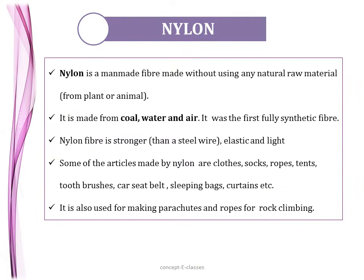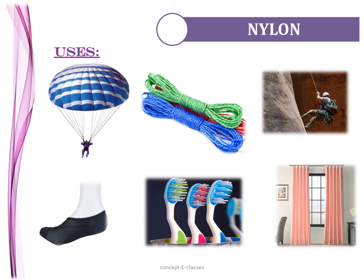The second synthetic fiber is nylon. Nylon is a man-made fiber made without using any natural raw material from plant or animal. It is made from coal, water, and air, and was the first fully synthetic material, discovered in 1931. The nylon fiber is very strong — stronger even than steel wire — and it is elastic as well as light. Some articles made from nylon are clothes, socks, ropes, tents, toothbrushes, and car seat belts. Because of its high strength it is also used for making parachutes and ropes for rock climbing.